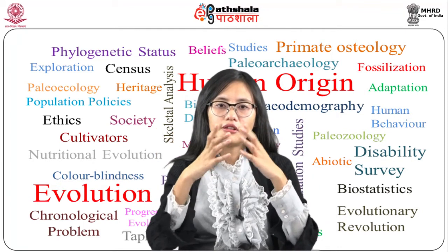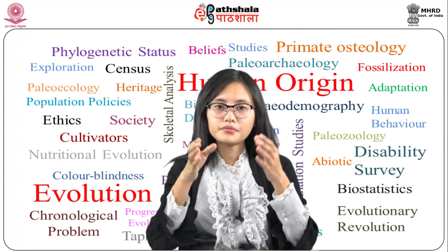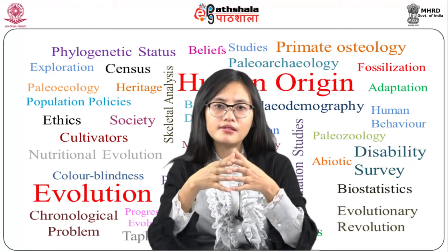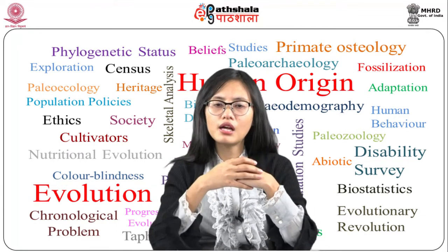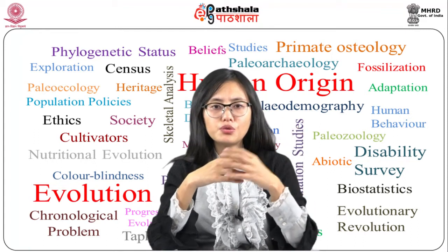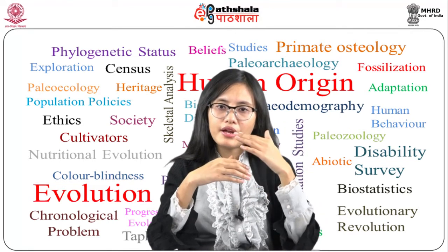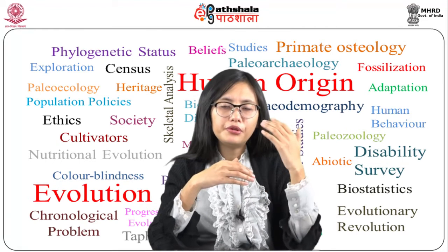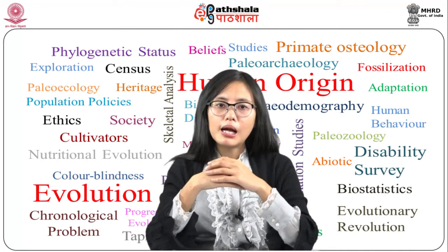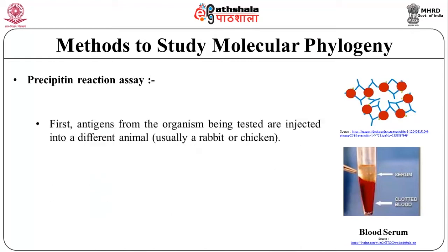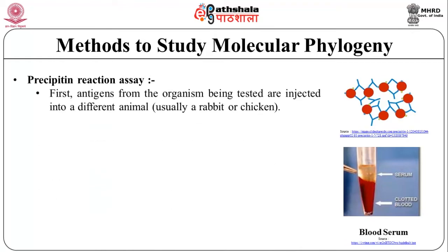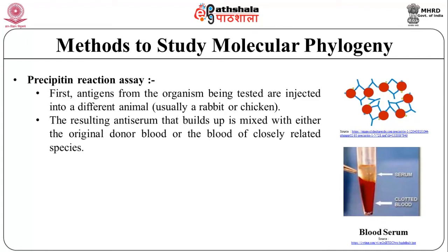Now let us discuss the different methods to study molecular phylogeny. The precipitine reaction assay is one of the earliest indirect methods applied to primates and many other mammals to decipher evolutionary relationships. It makes use of the functions of the immune system and its reactions to foreign protein molecules. The preferred vector initially was blood serum. This analysis measures the degree of in vitro clotting or precipitate formation. Antigens from the organism being tested are injected into a different animal, usually a rabbit or chicken. The resulting antiserum is then mixed with either the original donor blood or the blood of closely related species. Application of this precipitate elicits different degrees of coagulation in the tested blood. For example, human antiserum not only causes a strong reaction with the donor human blood, but also with the blood of chimpanzees, gorillas, macaques, and so on, in decreasing intensity according to taxonomic distance.